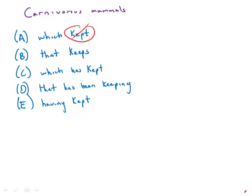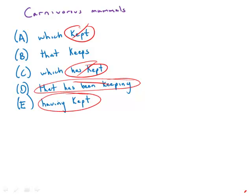So which kept, that's incorrect. Has kept, that is incorrect. That has been keeping, not only incorrect but also incredibly awkward. And having kept, that's actually just a train wreck if you read it with the original sentence. That doesn't work grammatically at all.